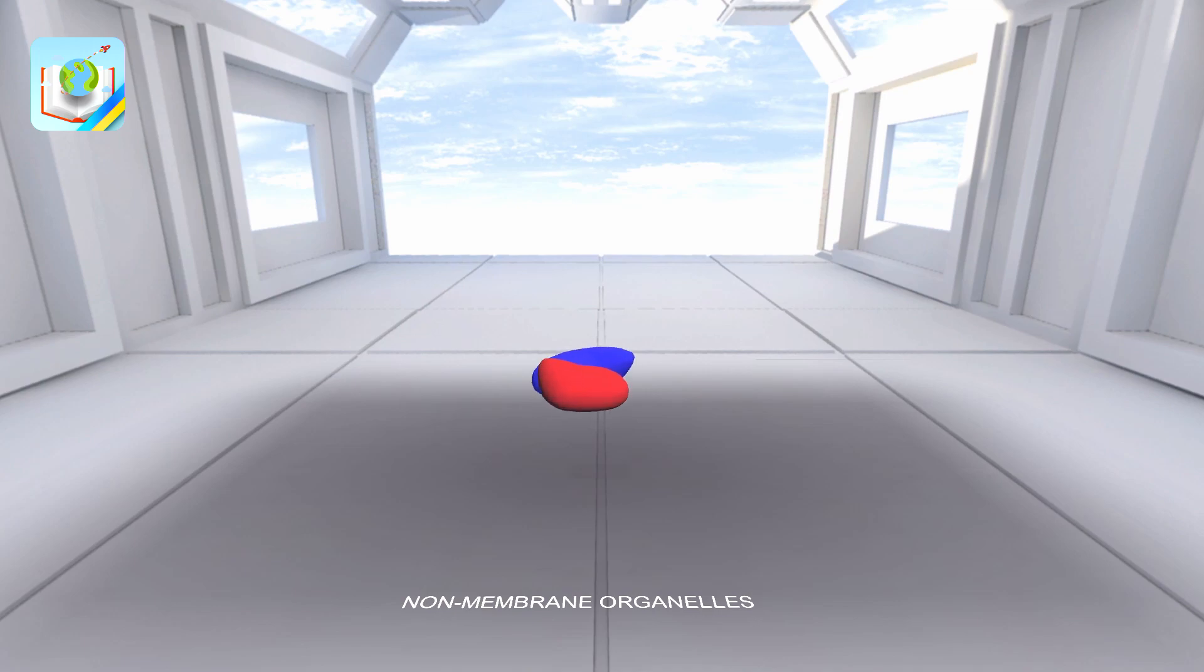Ribosomes are organelles without a surface membrane that participate in protein synthesis. They are present in cells of both prokaryotes and eukaryotes, and have the form of spherical bodies that consist of large and small subunits.